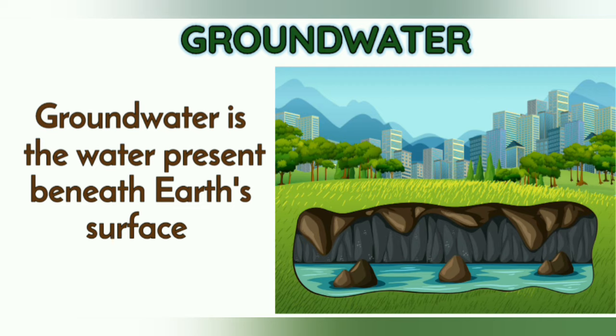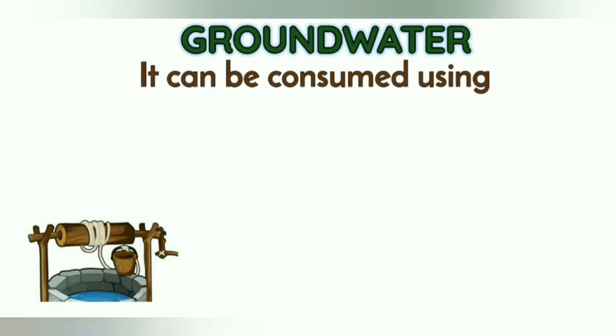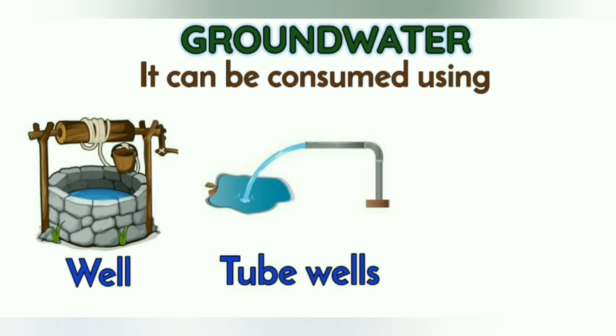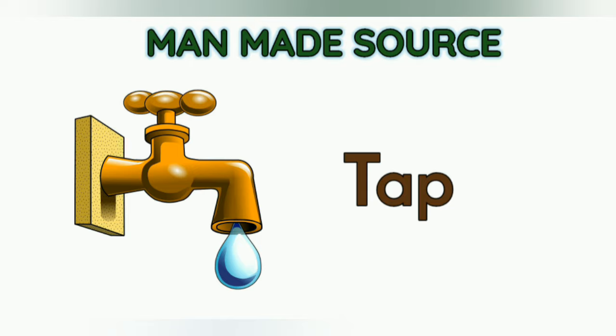It is the water present beneath the earth's surface. Groundwater can be consumed using wells, tube wells, and hand pumps. Water from all these sources reaches our house through a tap.